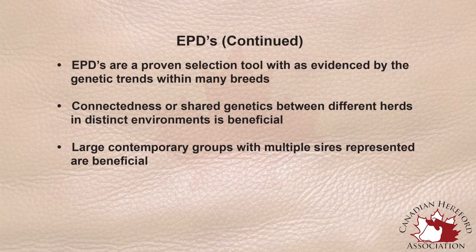A large contemporary group is a great asset to genetic evaluation because if we have a large contemporary group with a large number of progeny sired by a variety of bulls, we have a lot of variation in the genetic merit of those animals. If we are able to compare a large contemporary group with a high number of animals, we can accurately find very distinguishable differences between all those animals in a particular environment, which is our contemporary group. So we fix the environment and provide the same nutrition and conditions for all of those animals to develop in, and if we have a large number of animals, we're going to find a lot of differences between them.